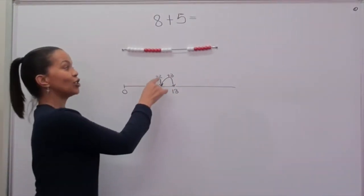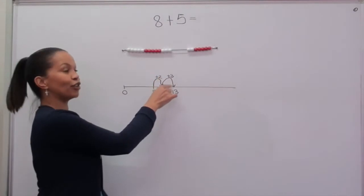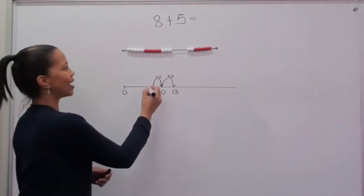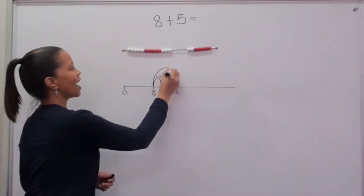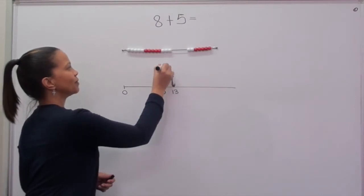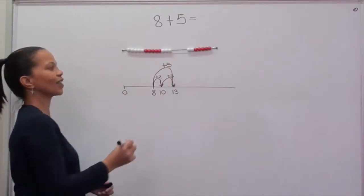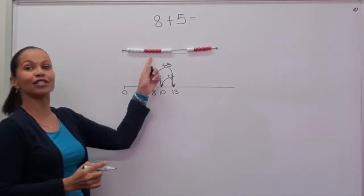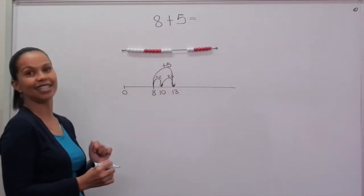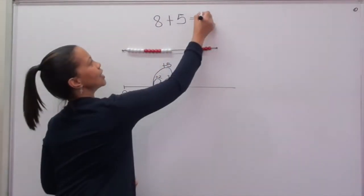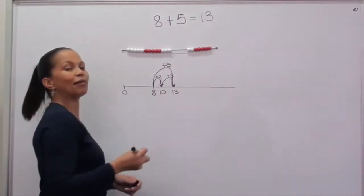So I've added 2 and I've added 3. That is the same as adding 5. So 8 plus 5 is 13 and I can write my answer in my number sentence.